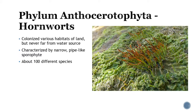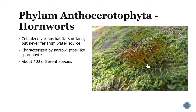Phylum Anthocerotophyta are your hornworts. These do have the flat lobe, but you're going to start to see those little stems. They have colonized various habitats, but one thing about these guys — especially all these nonvascular ones — they're always going to be close to a water source. They're going to have this sporophyte that's going to be that long, narrow pipeline, and there are about 100 different species.